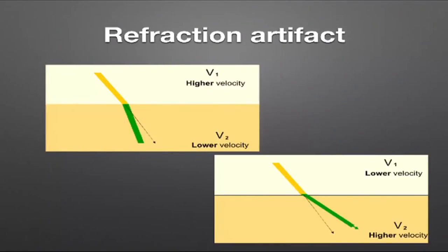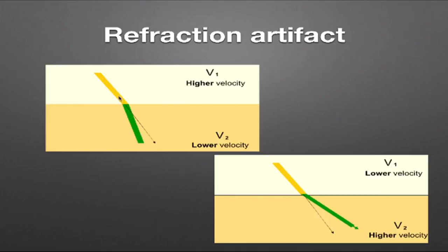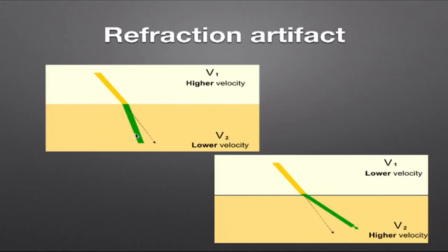Refraction artefacts can create range ambiguity. Because the ultrasound machine assumes waves travel in a straight line, a refracted wave may display a structure in the wrong position — where the machine thinks the structure is located is actually different from where it truly sits, leading to structures being displayed in slightly the wrong location.